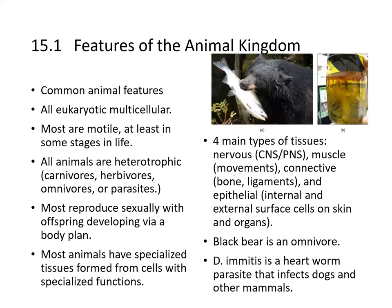Some features of Animal Kingdoms: common features are that they are all eukaryotic and multicellular. Most are motile, at least in some stages of life. All animals are heterotrophic — carnivores, herbivores, omnivores, or parasites. Most reproduce sexually, with offspring developing via a body plan. Most animals have specialized tissues formed from cells with specialized functions.